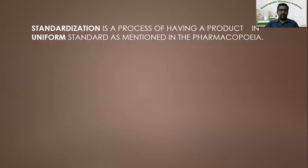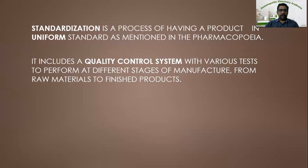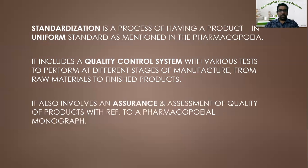The process of standardization includes the quality control system with various tests to perform at different stages of manufacture — from raw materials to finished product. That means from the drug substances, the raw materials, to in-process quality control and the finished product, that is the final medicine. It also involves an assessment of quality of product with reference to a pharmacopoeia monograph.